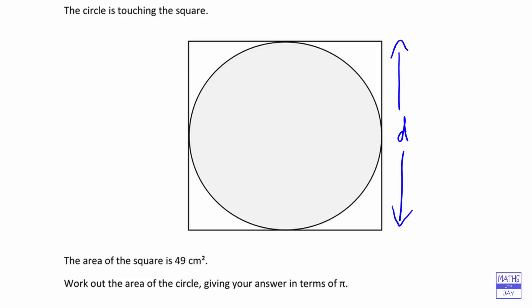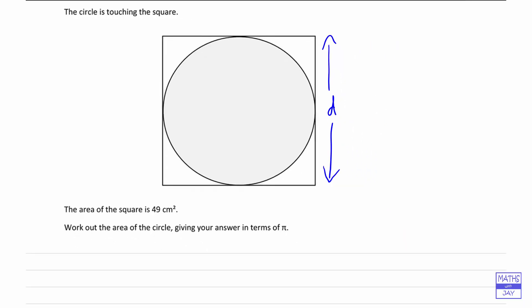So when we're told that the area of the square is 49 cm squared, then we know that d squared is equal to 49. Now what we want to do is to work out the area of the circle, giving the answer in terms of pi.